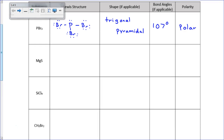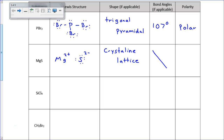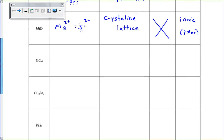The next one, MgS, is a metal and a nonmetal, which makes it an ionic structure. For ionic structures, electrons are transferred, and we end up with a 2 minus charge. For the shape, ionic compounds don't form one of the covalent shapes — they fit within a crystalline lattice structure. There are no bond angles associated with ionic substances. And if it's ionic, it is definitely polar. In fact, ionic is like a really extreme version of polar — these have full 2 plus and 2 minus charges. Everything that's ionic is polar.